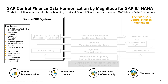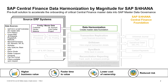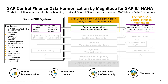Central Finance Data Harmonization by Magnitude provides end-to-end integration of the core master data relevant for Central Finance, including source-specific extractions for SAP and non-SAP systems, data profiling, intelligent harmonization, and automated loading into Central Finance.